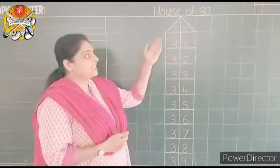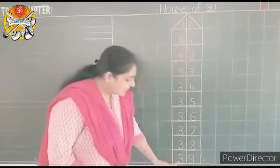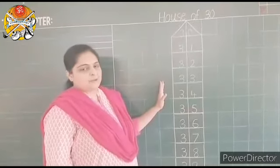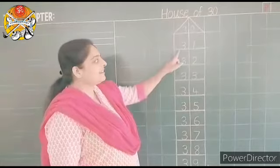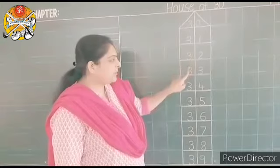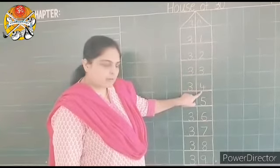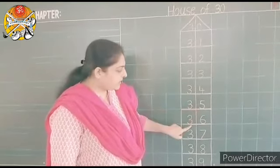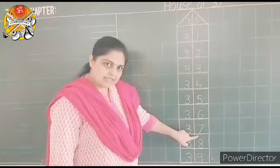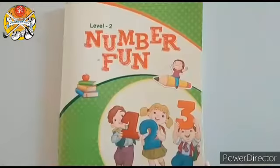So children, this is house of 30. Numeral 31 to 39 counts in this house. So let's revise it again. 31, 32, 33, 34, 35, 36, 37, 38, 39.